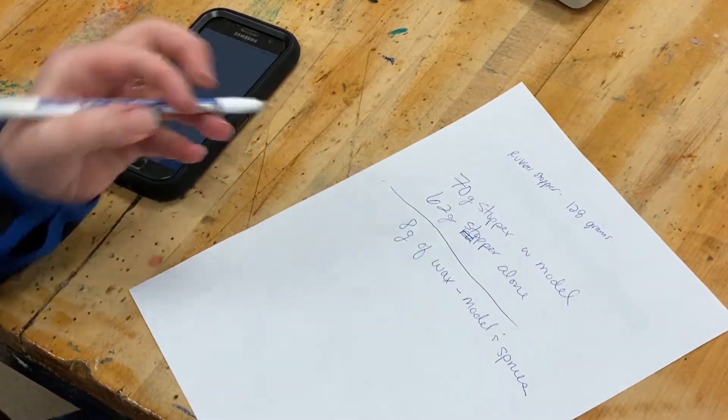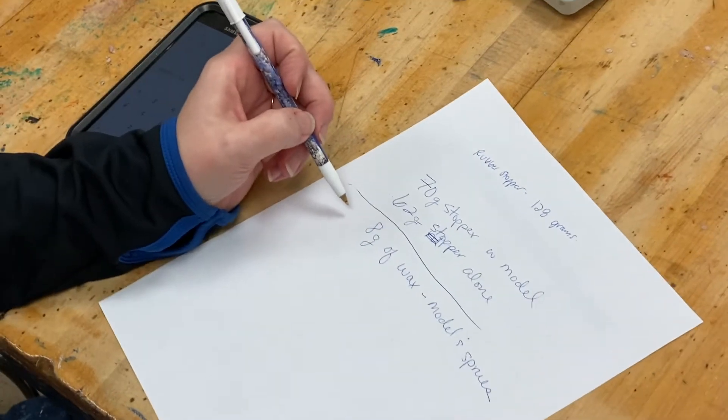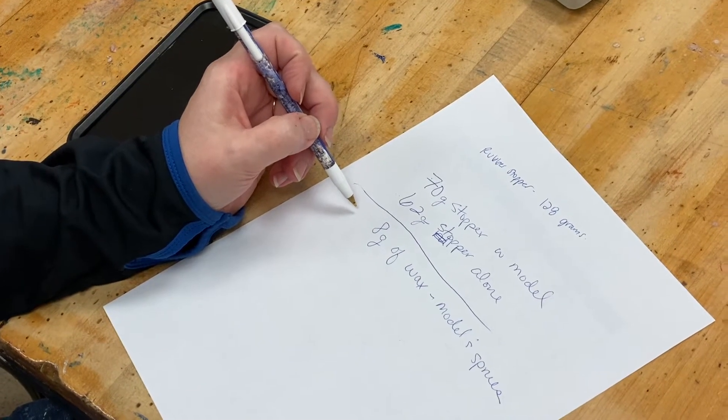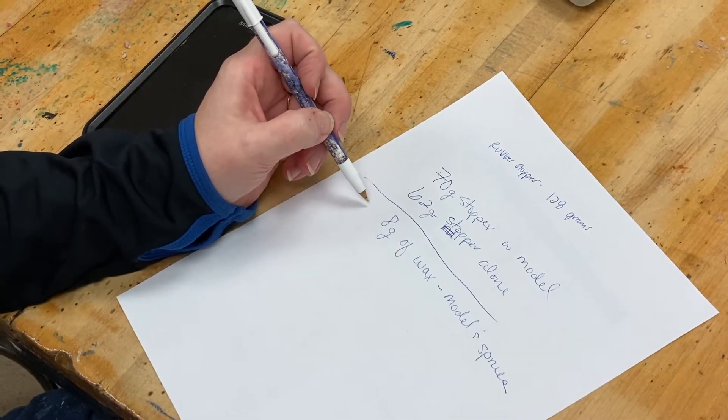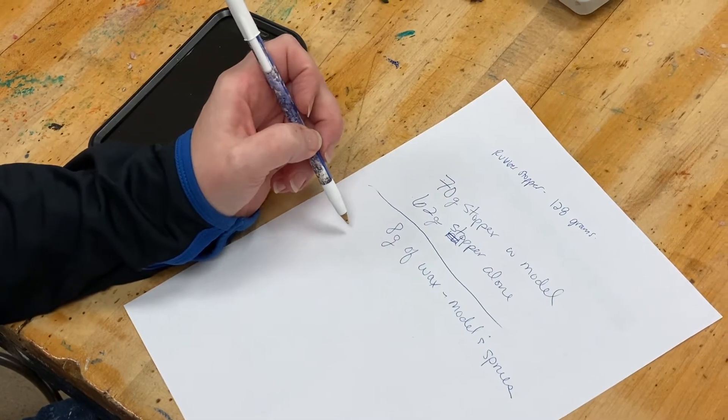Then what I want to do is I actually need to figure out which type of metal I am going to cast with, and I need to find the specific gravity of that metal.